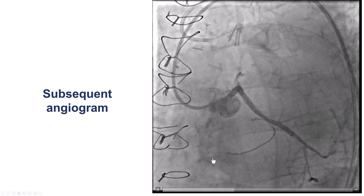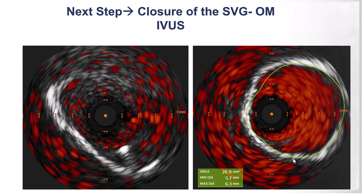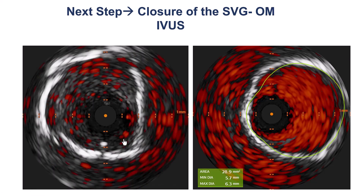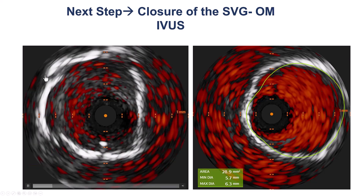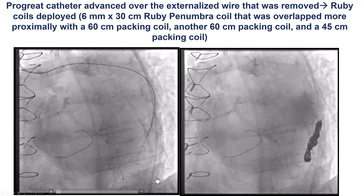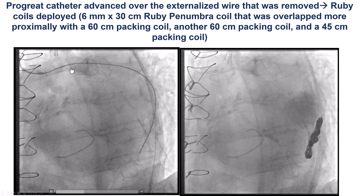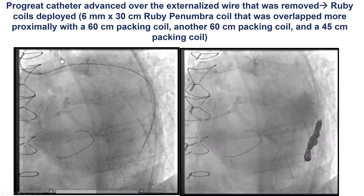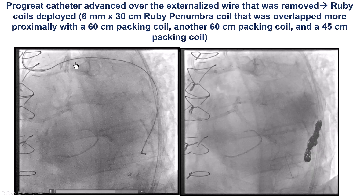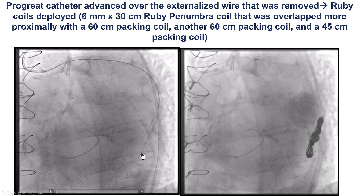This is how the angiogram looks afterwards — we have good flow into the circumflex. At this point we were finally ready to occlude the aneurysmal SVG. IVUS showed the SVG had about a 6mm distal diameter. We occluded both the distal and proximal portions — this is key for treating aneurysms, as you cannot only occlude one part. Both the proximal and distal portions of the SVG must be occluded. We decided to use coils for occluding the distal portion.